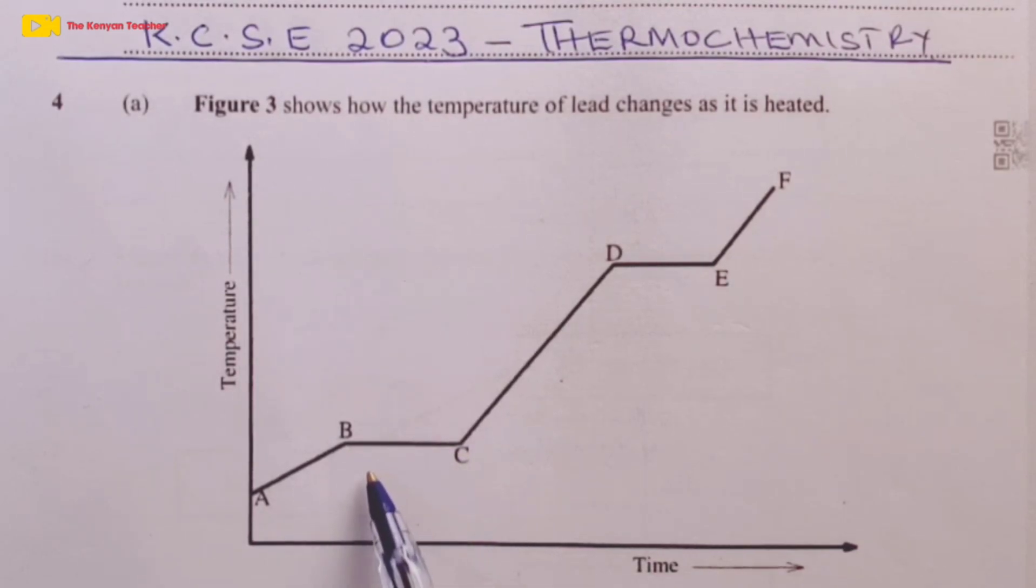Between C and D, lead is in molten or liquid state. Then we have a similar situation to region BC being witnessed in DE. Here we are evaporating liquid lead. And finally, between E and F, we have the gaseous form of our substance.